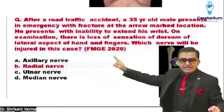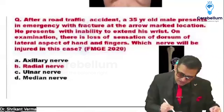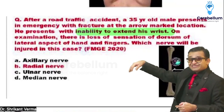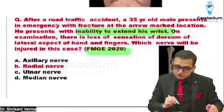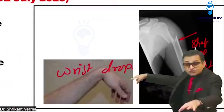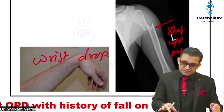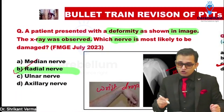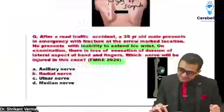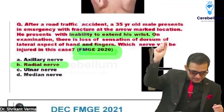FMG 2020: a fracture of the shaft of the humerus was noted with inability to extend the wrist — this is wrist drop. This is our bullet trend discussion: they are asking the same question in different ways, combining orthopedics and radiology. The answer is again the radial nerve. FMG 2023 and 2020 both test this.